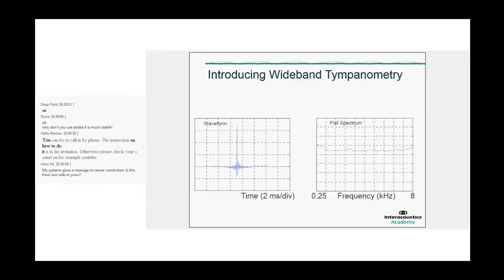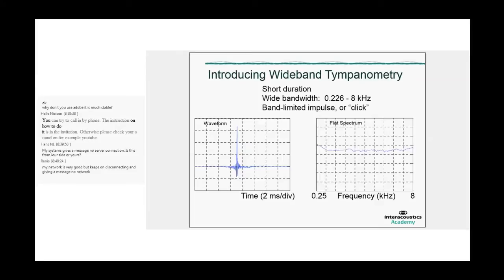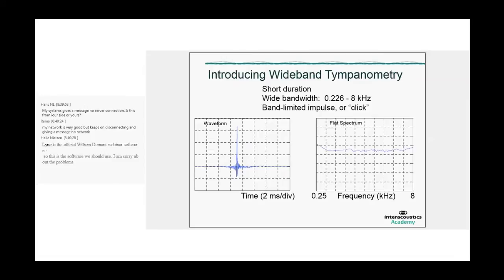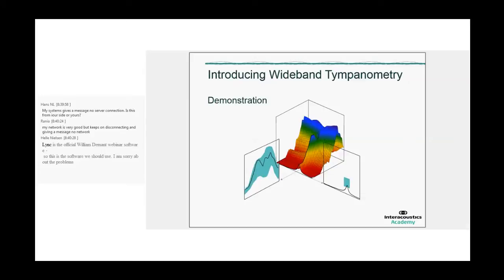So it's time to introduce wideband tympanometry. The difference between traditional tympanometry lies mostly in the probe tone that is being used. We think away the single probe tone and we put in a click, which we see on the left-hand side as function of time. A click is very short in time, but it contains many frequencies. And on the right-hand side, we can see that it's a very flat frequency spectrum for the full frequency range of the audiogram. This click is repeated very quickly, which means that in time we very quickly get points that we connect together in a graph.